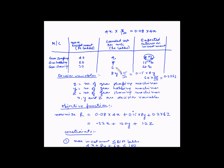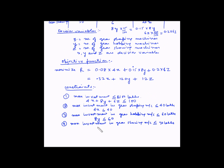The landed cost of gear shaving machines is 6 lakhs per machine and the quantity is z, so the total investment in gear shaving machines is 6z. The fourth constraint is: 6z ≤ 30. The fifth constraint is the non-negativity condition: x, y, and z should be greater than or equal to 0.